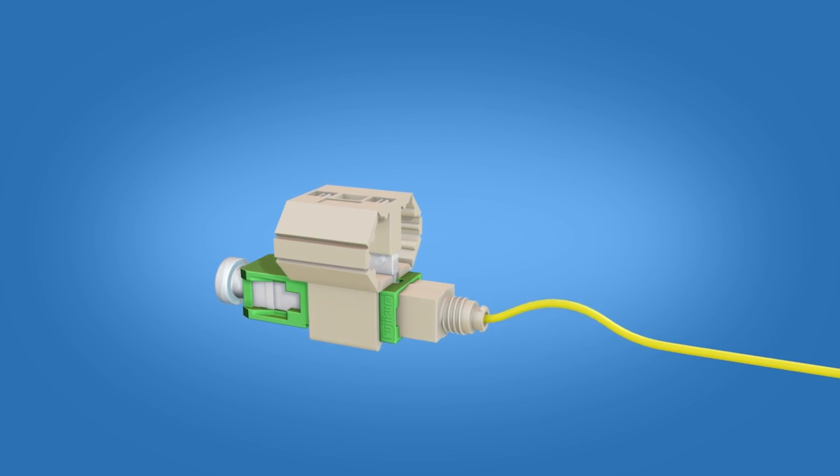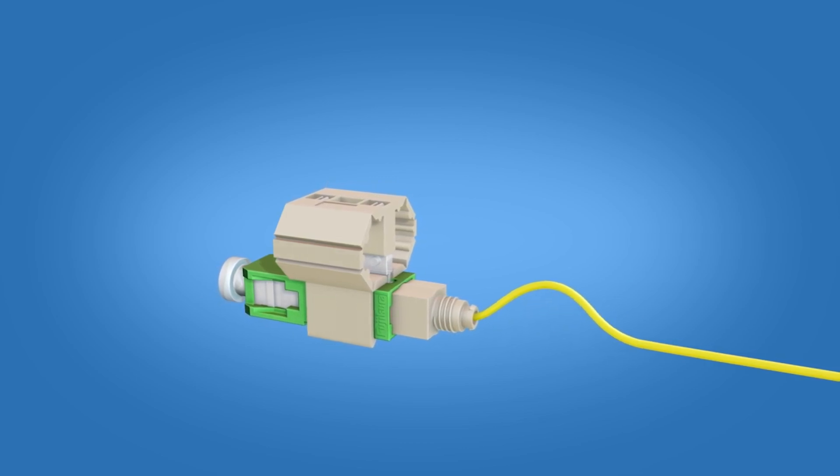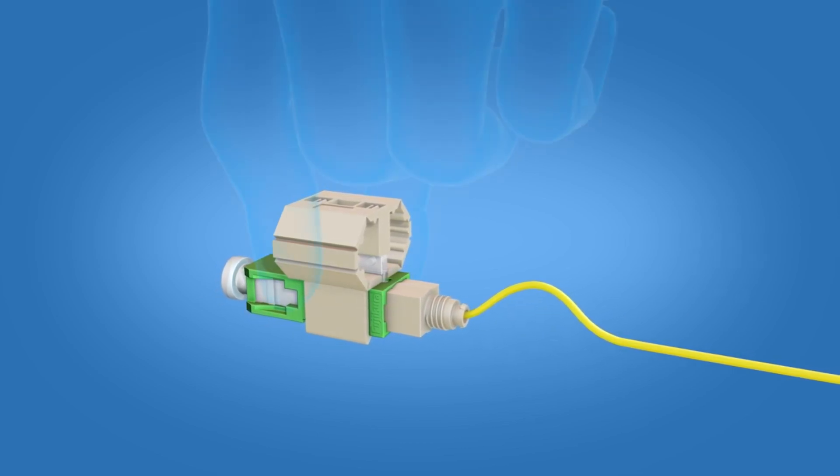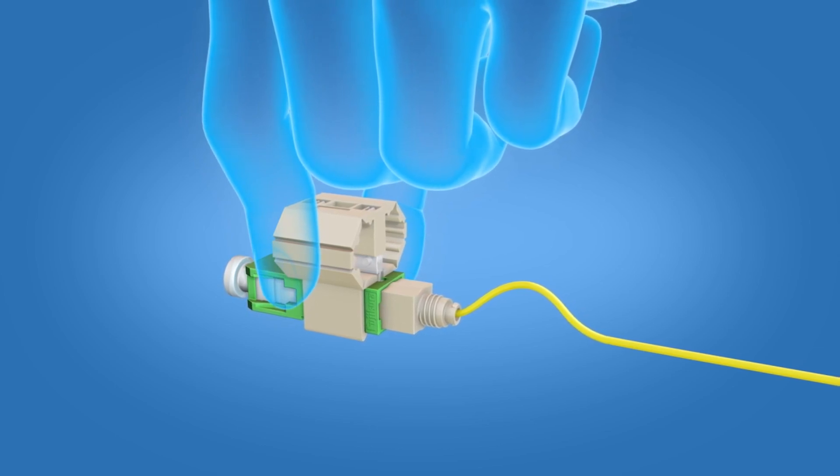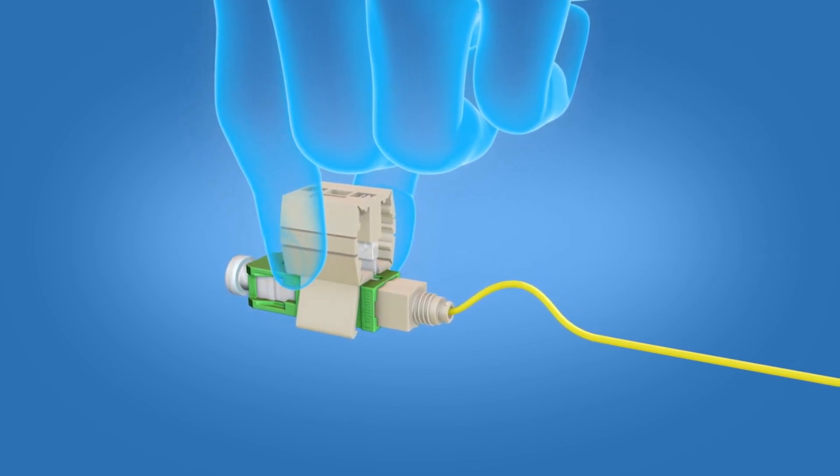Create a slight bend to maintain contact. Release the wedge clip by squeezing both sides and remove the wedge clip.